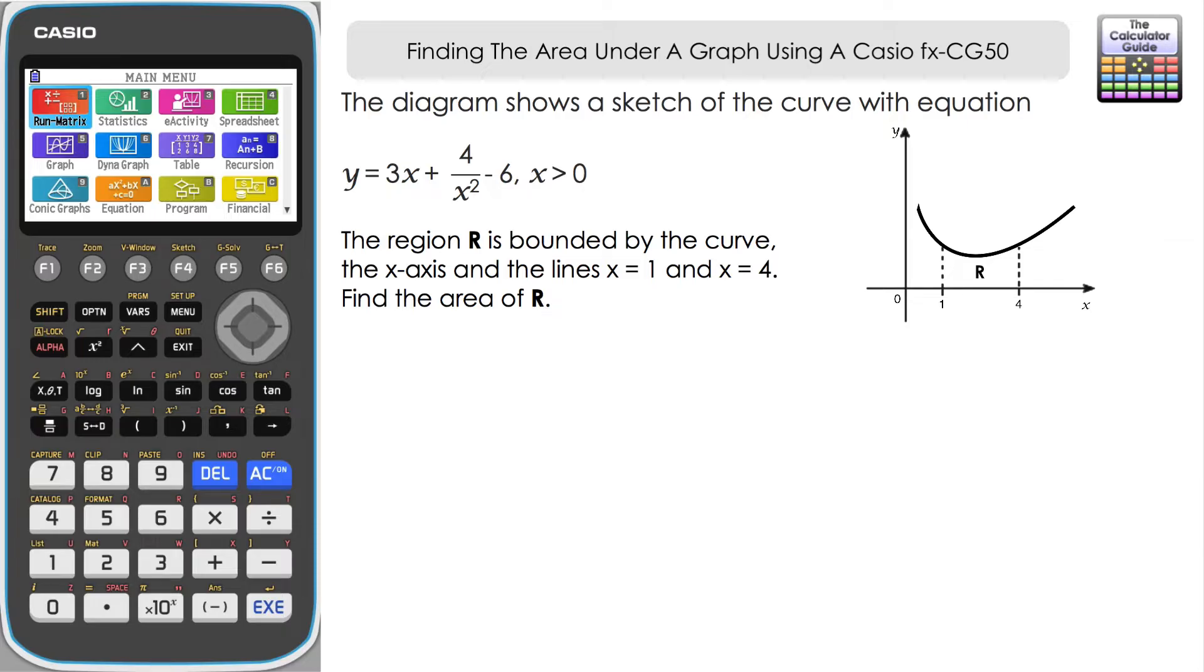Let's take a look at the first example here. The diagram shows a sketch of the curve with the equation y equals 3x plus 4 over x squared minus 6, where x is greater than 0. We've just got a section of the graph shown here, not the entire graph. The region R is bounded by the curve, you can see it there on the sketch, the x-axis and the lines x equals 1 and x equals 4. So x equals 1 and x equals 4 are our limits there. We've got to find the area of R.